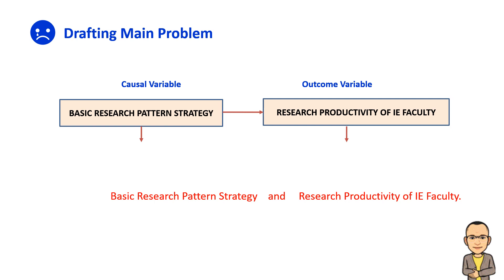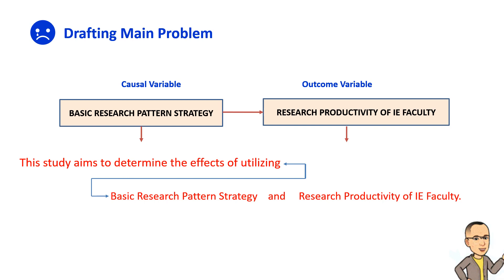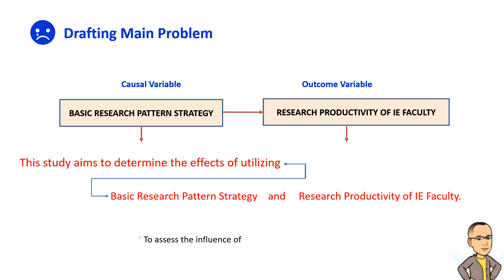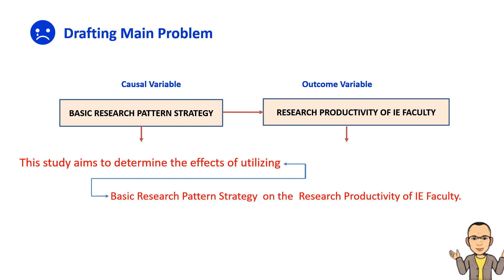After the research title is established, the main problem or statement of the problem can now be drafted. This is done by adding an objective phrase to the title. Objective phrases can include: 'to determine the effects of utilizing,' 'to investigate the relationship between,' 'to analyze the impact of,' 'to examine the efficacy of,' 'to explore the correlation between,' 'to assess the influence of,' and many more. After connecting the objective phrase, inspect the newly crafted main problem and fix any errors, like prepositions or conjunctions. In this example, there is a need to replace the conjunction 'and' with 'on the.' The finalized main problem: 'This study aims to determine the effects of utilizing basic research pattern strategy on the research productivity of Institute of Education faculty.'